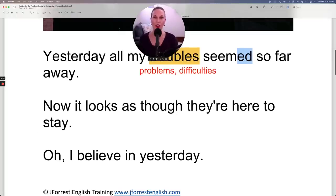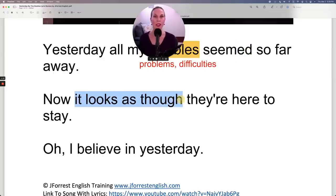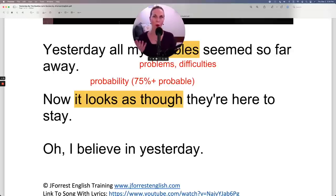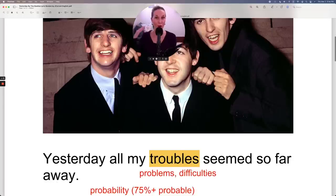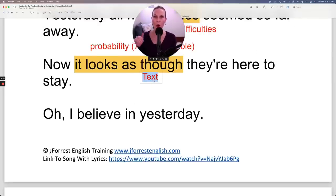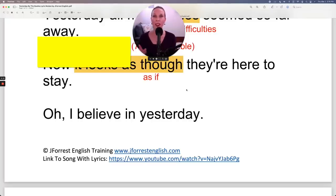Now it looks as though they're here to stay. Let's take a look at this. It looks as though. This is used to show probability. You can think of it as 75% probable, so 75% chance that something will happen. So here, the something is that his problems, his troubles are here to stay. Now, it looks as though is not the most commonly used. It sounds a little outdated, a little formal perhaps. And remember, the Beatles are from quite a long time ago. Today, more commonly, we say it looks as if they're here to stay. So it looks as though is grammatically correct, but in my opinion, it's more common to say it looks as if they're here to stay. They have the exact same meaning.